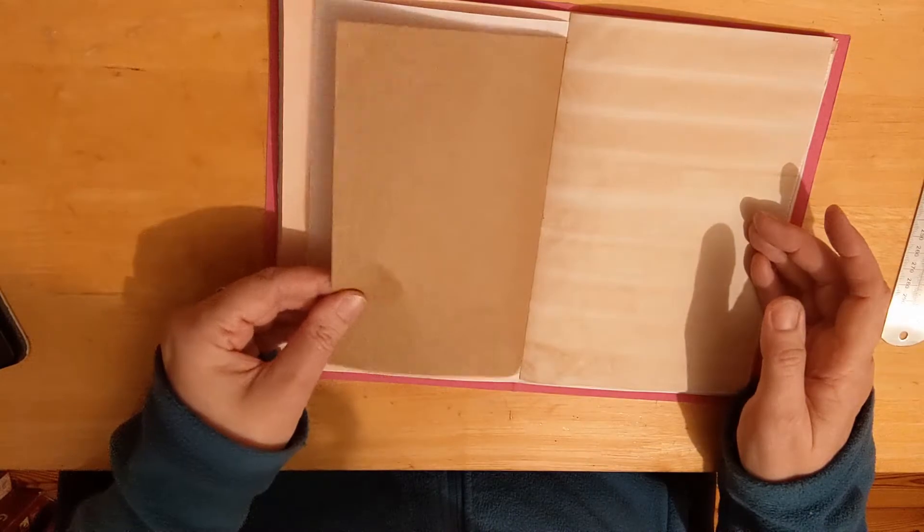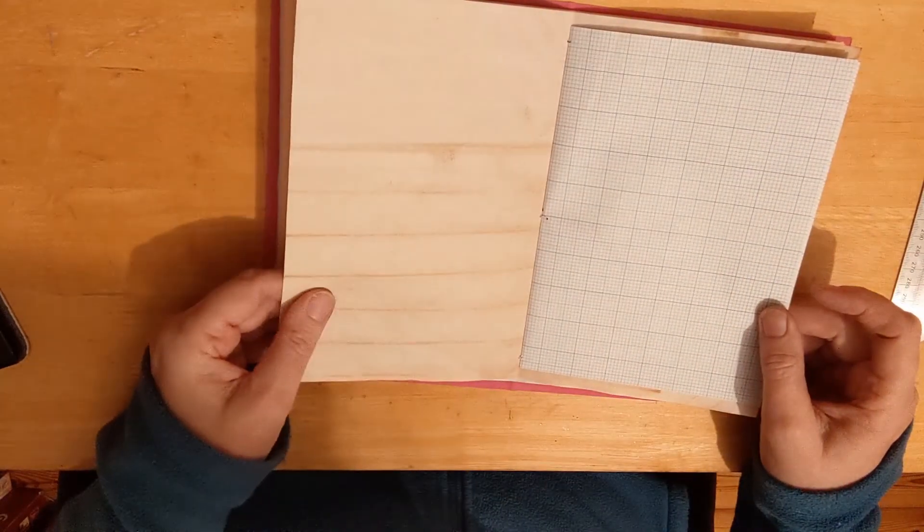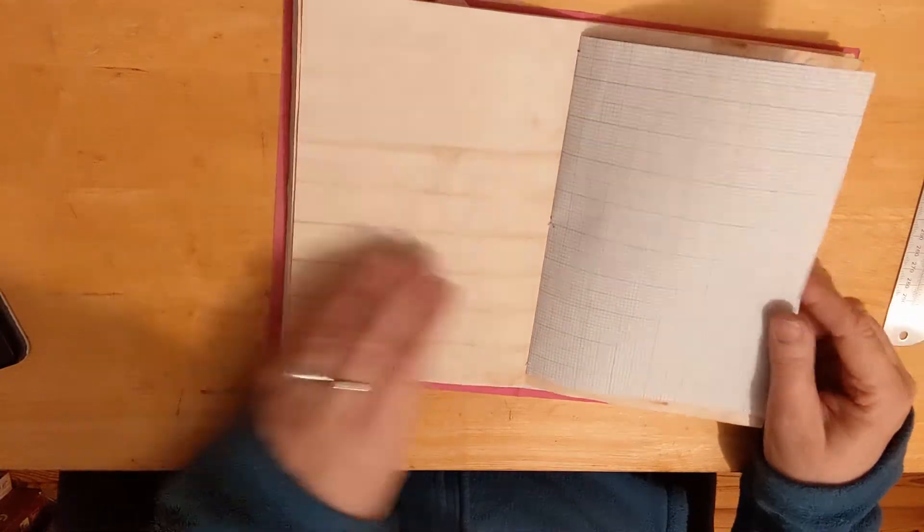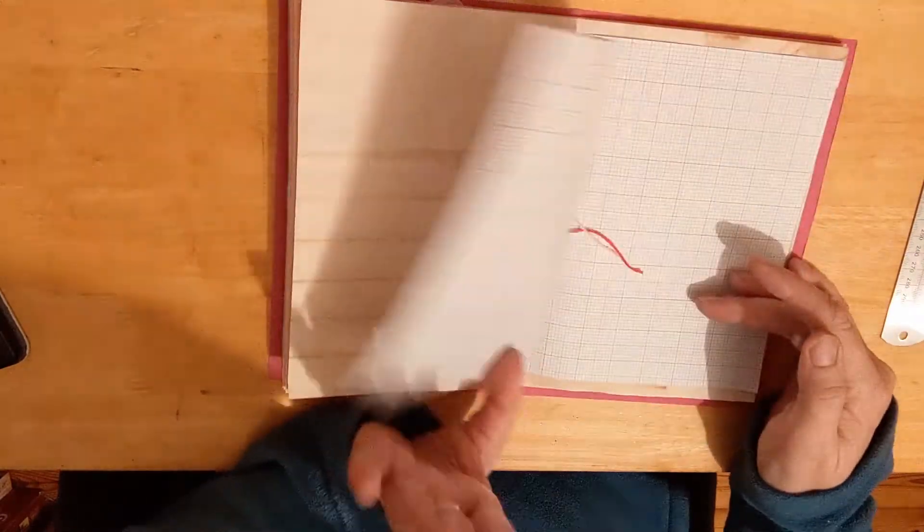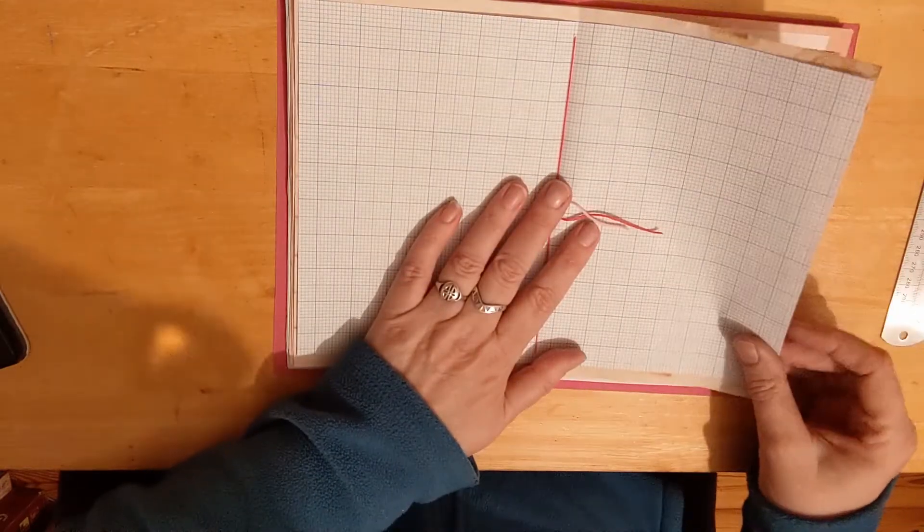And then some brown packaging paper. And then this is more, I think this is coffee dyed. One is tea and one is coffee. I can never tell the difference between them. And then this is more graph paper. It's the center, it's only a one signature little booklet.